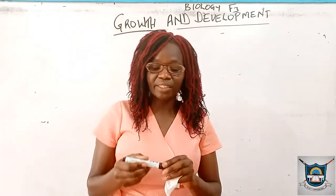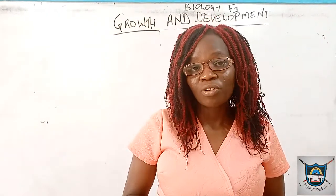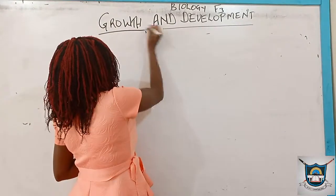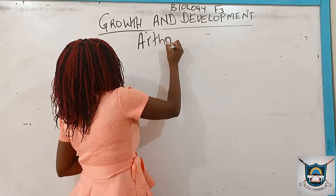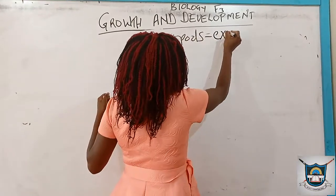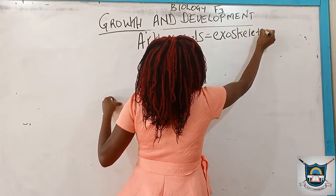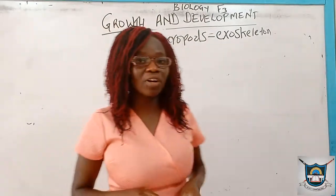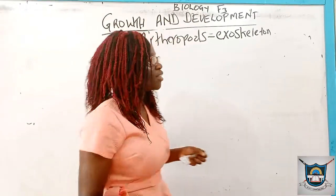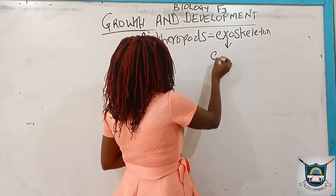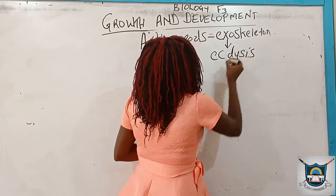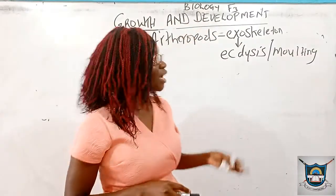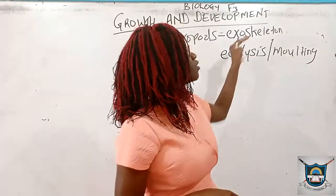In some organisms like the insects and arthropods, growth occurs in periods which are prevented by exoskeletons. The arthropods have exoskeletons which hinder development, so development in these organisms occurs only when the exoskeleton is shed. The process of shedding the exoskeleton is called molting.